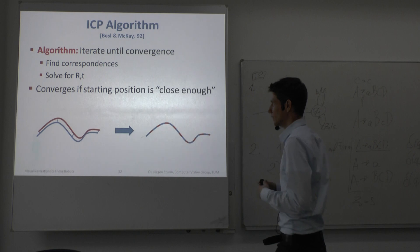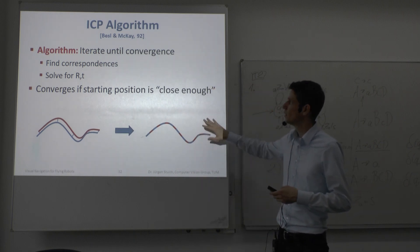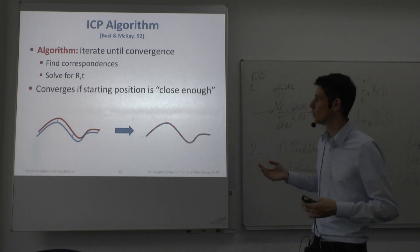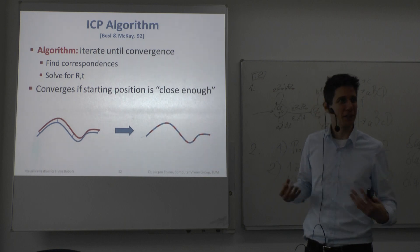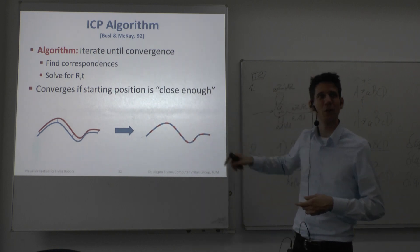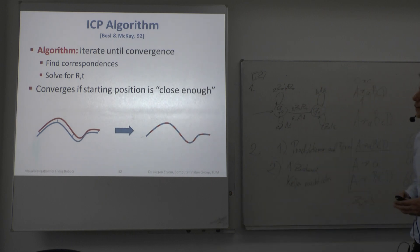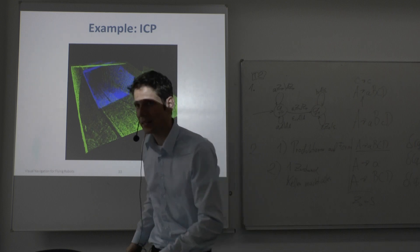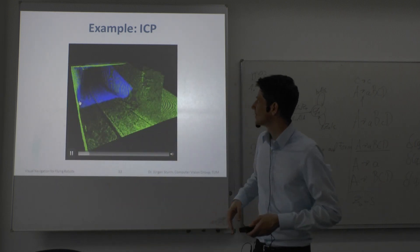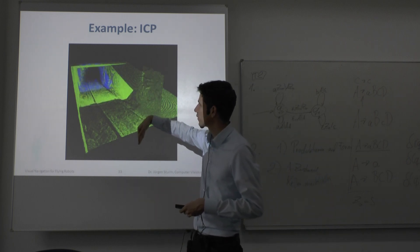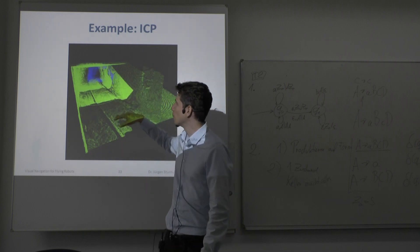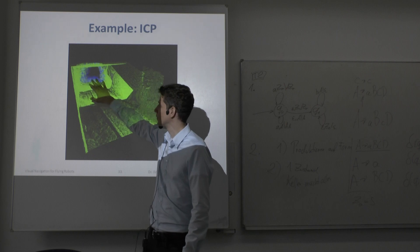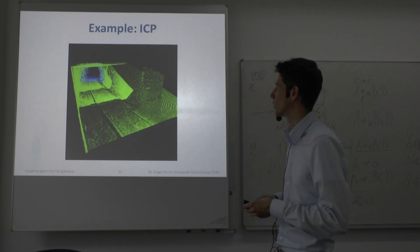In general you don't have good correspondences. So you guess correspondences, compute the optimal transformation (which brings the clouds closer but may not be perfect), then repeat — updating correspondences and recomputing the transformation iteratively until convergence. This is ICP. It converges very well when the starting position is close enough; it is a local search and can end up in a local minimum. A demo shows different scans taken in a mine: each new scan is iteratively aligned to the existing point cloud, and after ICP converges the new points are added, building up a large aligned point cloud.